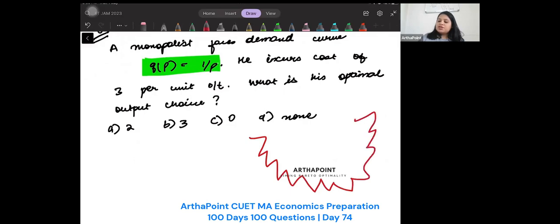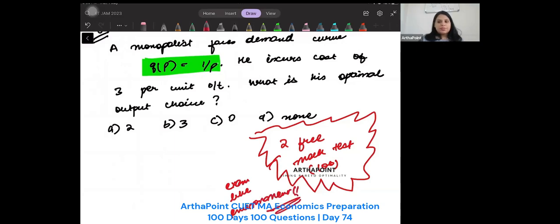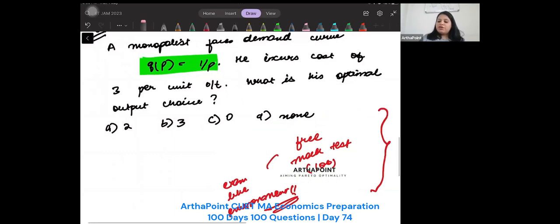The announcement is that we are giving two free mock tests, full mock tests, 100 question mock tests, which you can give in exam-like environment with us. So what you have to do is you just have to contact Artha Point, you know our number well, and after contacting us, you have to register on a Google form and you will be given two free mock tests of CUET, which you can go ahead and give in an exam-like environment. Both of them will have 100 questions each.